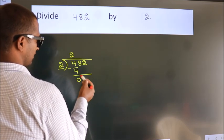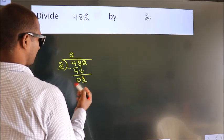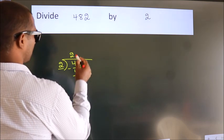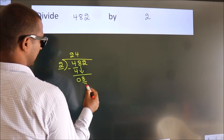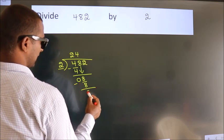After this, bring down the beside number. So, 8 down. When do we get 8? In 2 table. 2 4's, 8. Now, we subtract. We get 0.